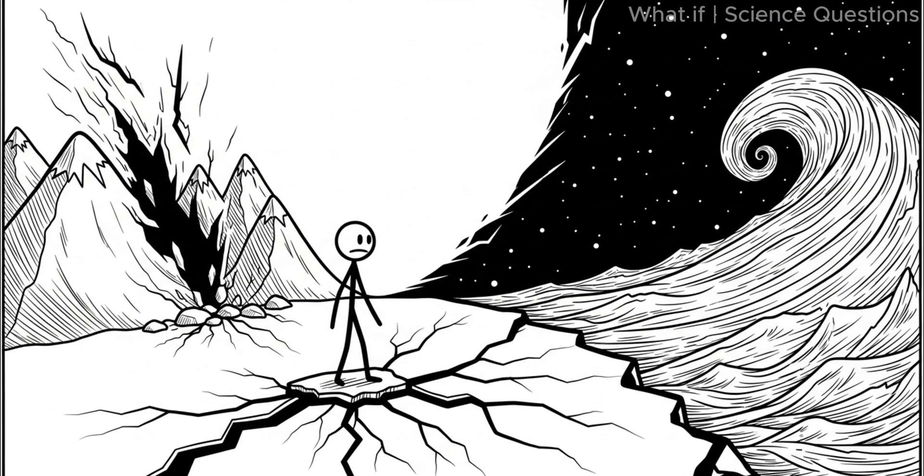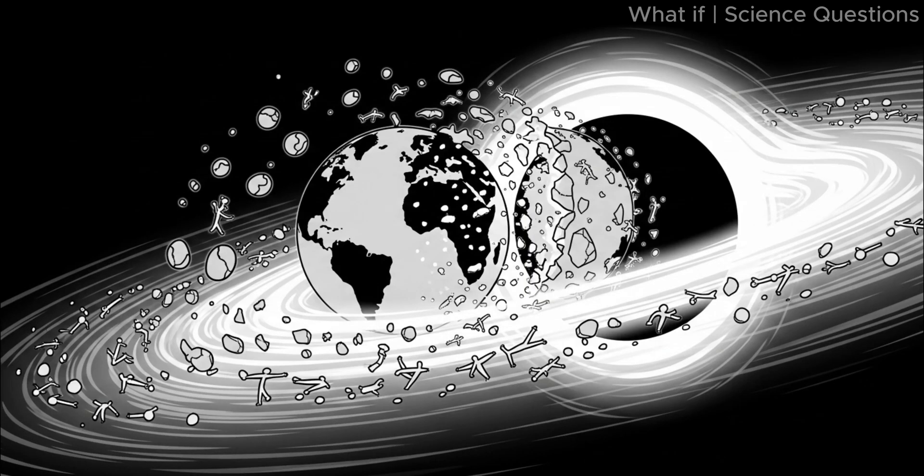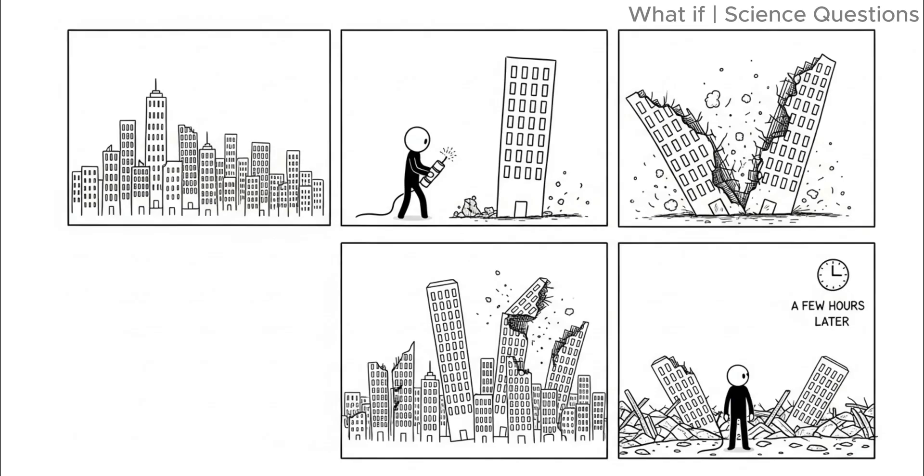Mountains would collapse, oceans would rise into space, and the crust would shatter. Eventually, Earth would be shredded into a glowing ring of debris spiraling into the black hole, just like the accretion disks we see around black holes in deep space. From start to finish, this destruction could take only a few hours.